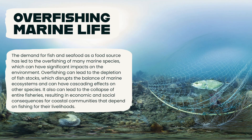One real-life example of how resource consumption impacts the environment is the overfishing of marine species. The demand for fish and seafood as a food source has led to the overfishing of many marine species, which can have significant impacts on the environment. Overfishing can lead to the depletion of fish stocks, which disrupts the balance of marine ecosystems and can have cascading effects on other species. It can also lead to the collapse of entire fisheries, resulting in economic and social consequences for coastal communities that depend on fishing for their livelihood. Additionally, many fishing practices, like bottom trawling, long-line fishing, and driftnet fishing, are very destructive to marine habitats and ecosystems.